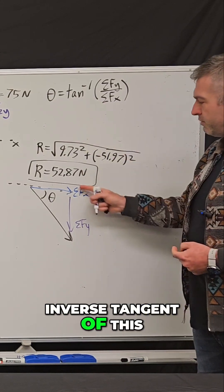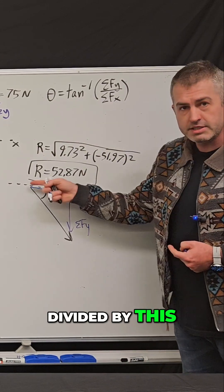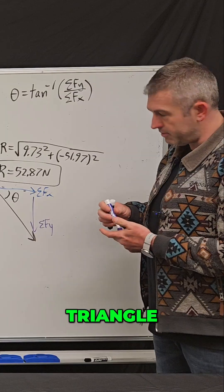And so if I do the inverse tangent of this divided by this, that will give me this angle that's enclosed by this triangle.